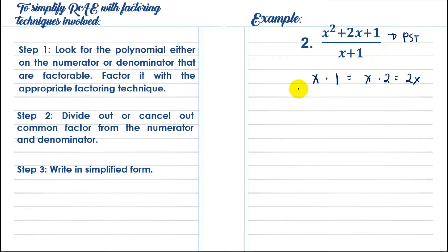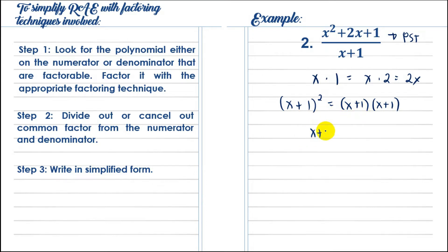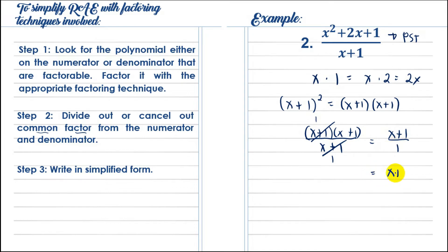To factor a perfect square trinomial: take the square root of the first term, the sign of the middle term, and the square root of the last term, enclosed in parentheses squared. This gives us (x plus 1) squared, meaning we have two factors of x plus 1. Dividing by the denominator x plus 1, the common factor x plus 1 cancels, leaving 1 times x plus 1 over 1, which simplifies to x plus 1.